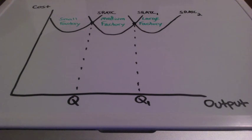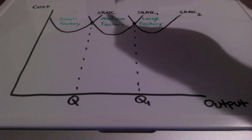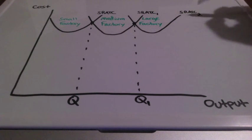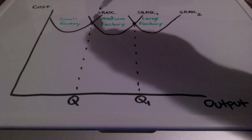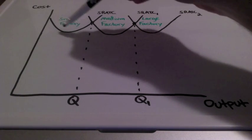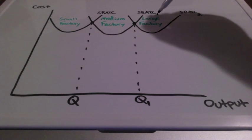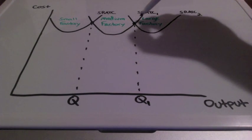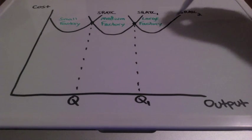What you see on this graph is that we have three short-run average total cost curves, abbreviated SRATC. Each of these short-run average total cost curves represents a different size factory: one for a small factory, one for a medium size factory, and one for a large size factory.